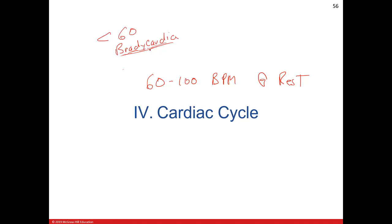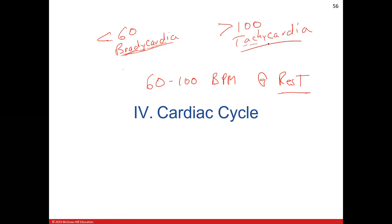For someone who doesn't have great stroke volume or great cardiovascular health, bradycardia can give you a lower cardiac output. The problem is you want to get oxygenated blood out of your heart to every tissue, especially the brain. So if the heart rate goes below 60, that's a problem. If blood pressure goes below 90 over 60, that's going to be very low cardiac output. If heart rate is greater than 100, it's called tachycardia.